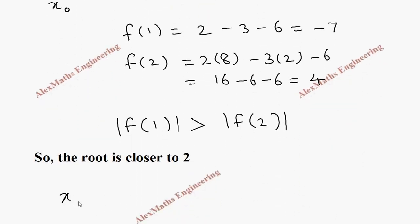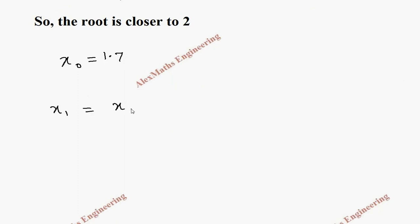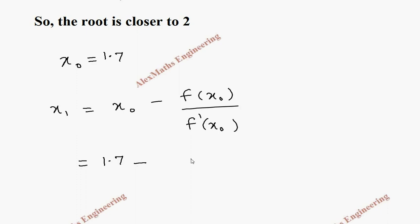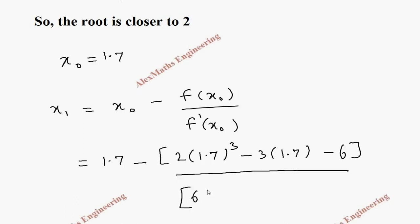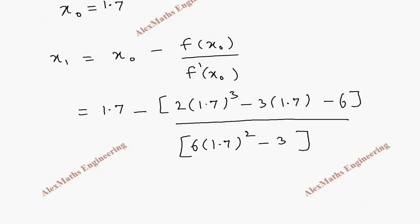Since the root is closer to 2, we take x0 as 1.7. Now x1 by Newton-Raphson's formula is x0 minus f(x0) divided by f'(x0). Substituting, this is 1.7 minus [2×(1.7)³ minus 3×1.7 minus 6] divided by [6×(1.7)² minus 3].